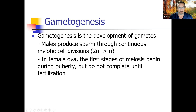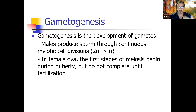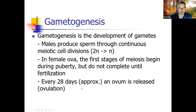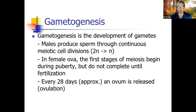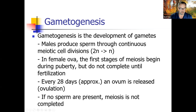In female ova, the first stages of meiosis begin during puberty but do not complete until fertilization. Ladies, if you've never been pregnant, you've never completed meiosis — it only completes after a sperm cell arrives and fertilization initiates. Males complete meiosis millions of times a day, producing billions of sperm throughout their lifetime. Every 28 days approximately an ovum is released — that's called ovulation. Interestingly, 28 days corresponds not to calendar months but to the lunar cycle. If no sperm are present, meiosis is not completed — it starts but then goes into suspended animation.